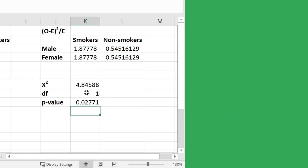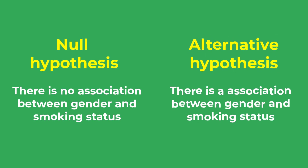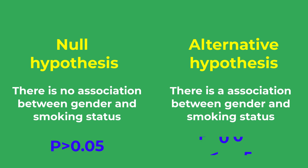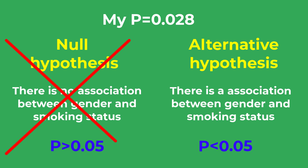To interpret the p-value I will state my two hypotheses. My null hypothesis was: there is no association between gender and smoking status. My alternative hypothesis was: there is an association between gender and smoking status. With an alpha level of 0.05, since my p-value of 0.028 is less than 0.05, I reject the null hypothesis and accept the alternative. Therefore, there does seem to be an association between gender and smoking status.